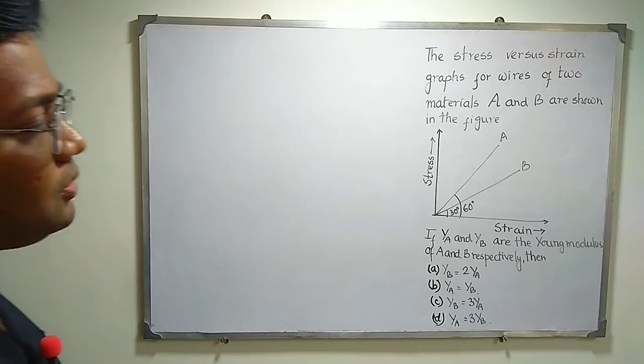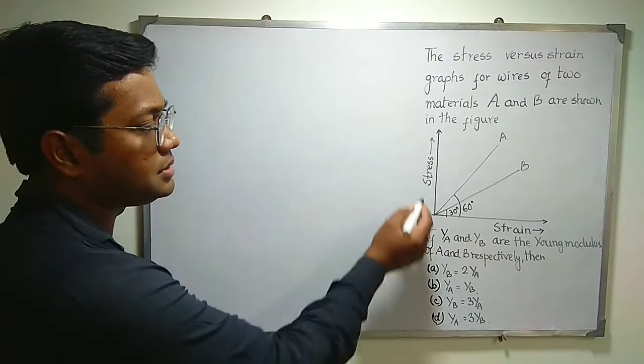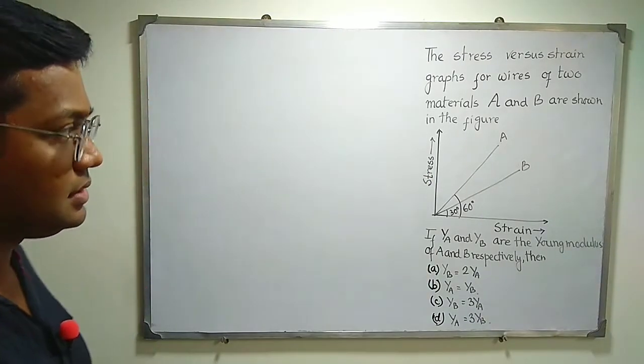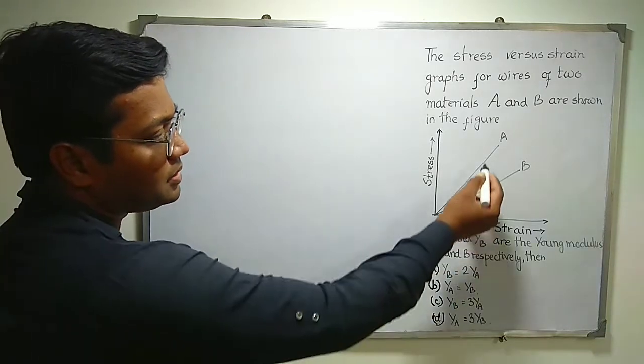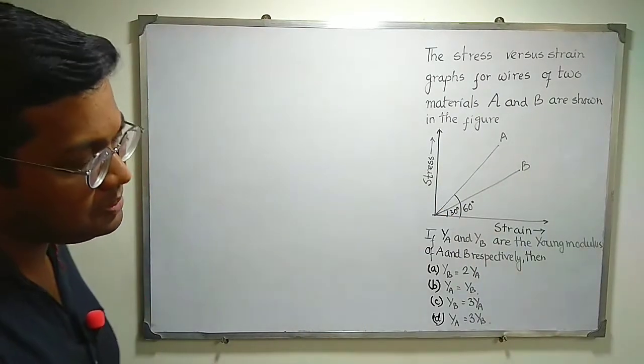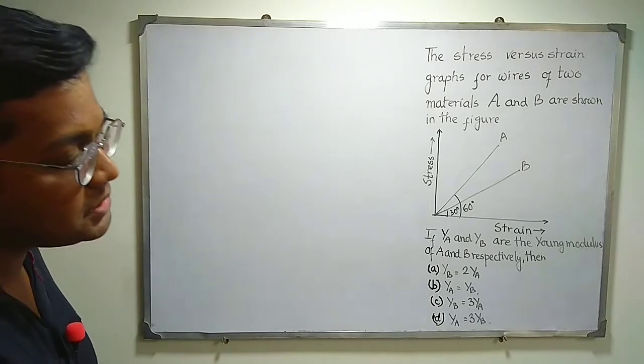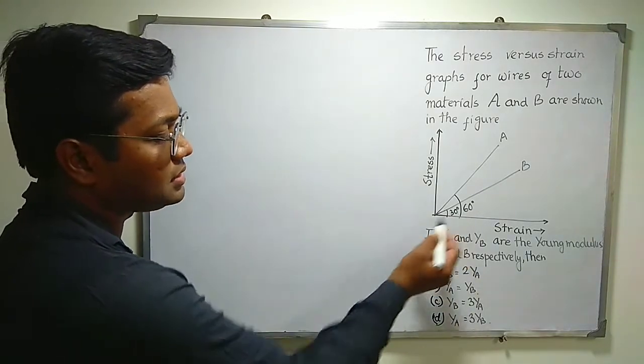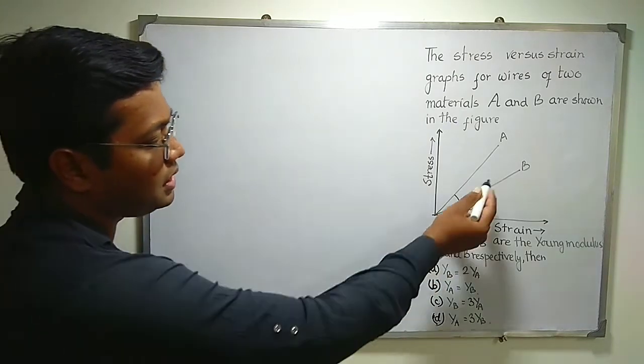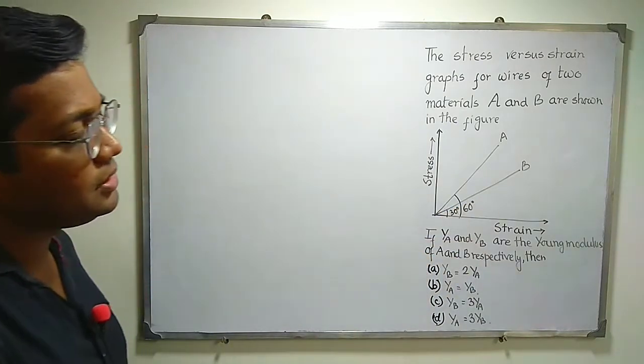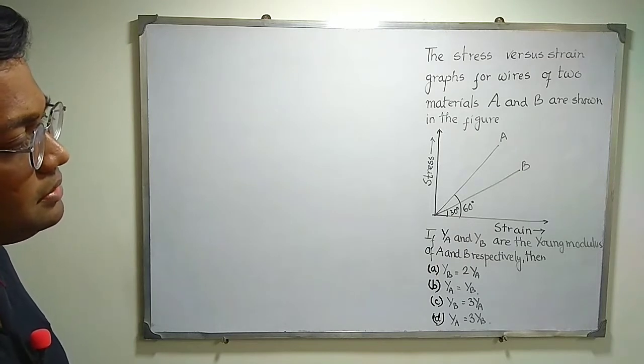The stress is plotted along the y-axis and the strain is plotted along the x-axis. From the graph it's observed that material A gives a straight line making an angle 60 degrees with the strain axis. For material B it is again a straight line but with different slope, making an angle 30 degrees with the strain axis.